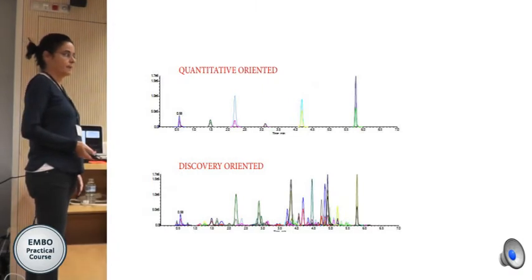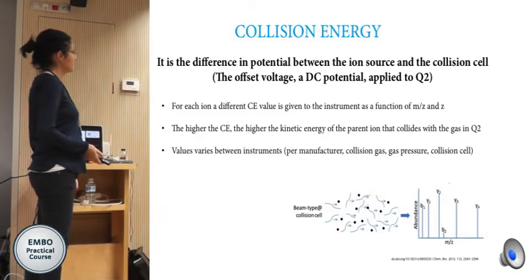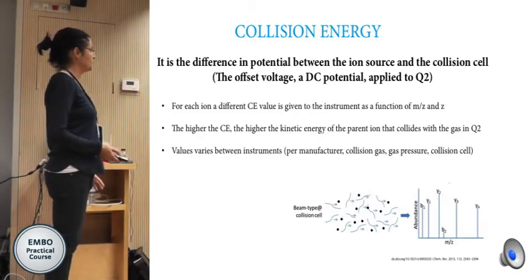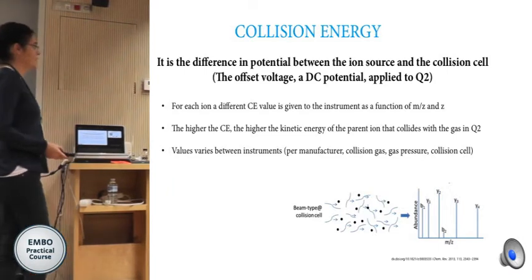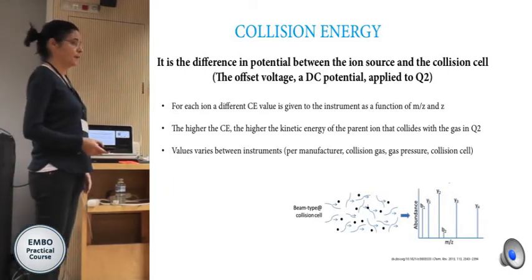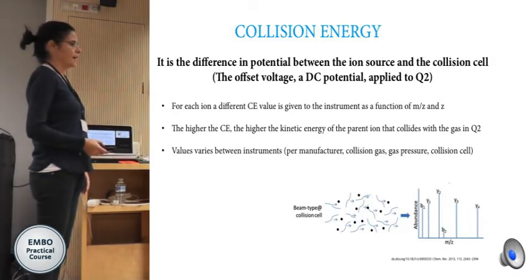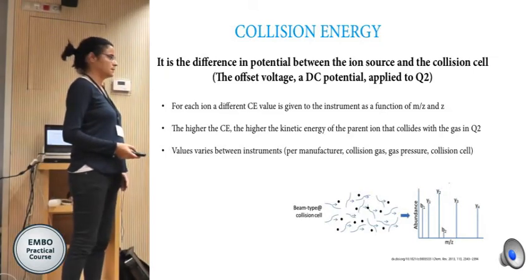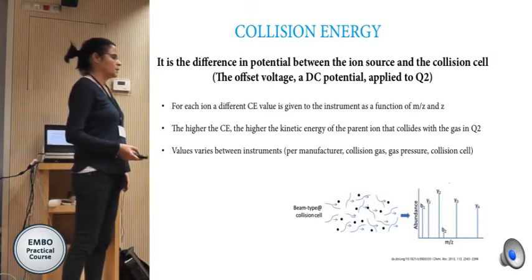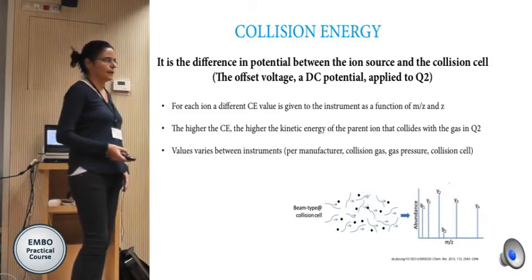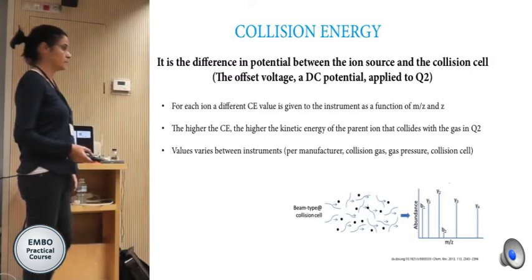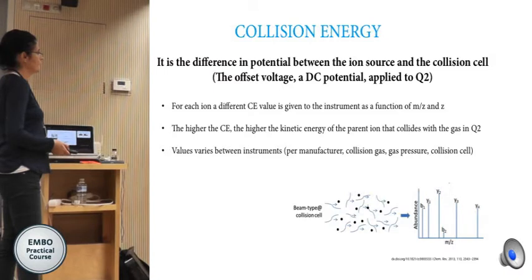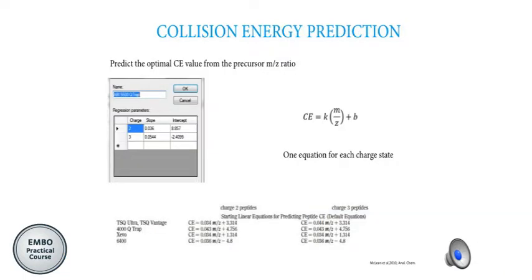You need to know that these optimizations can be done and in a particular case can be useful. The collision energy is a difference of potential that we use to break the peptides, and for each peptide, Skyline for example gives a different value for collision energy that depends on the mass and on the charge. The higher the energy, the more the peptide breaks, and the values can vary between manufacturers. It can also depend on the collision gas, the pressure of the gas, and the design of the collision cells.